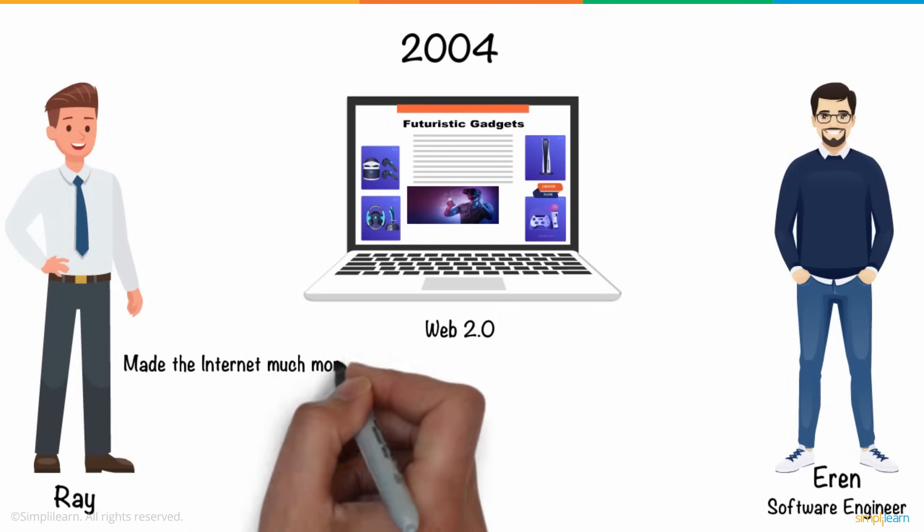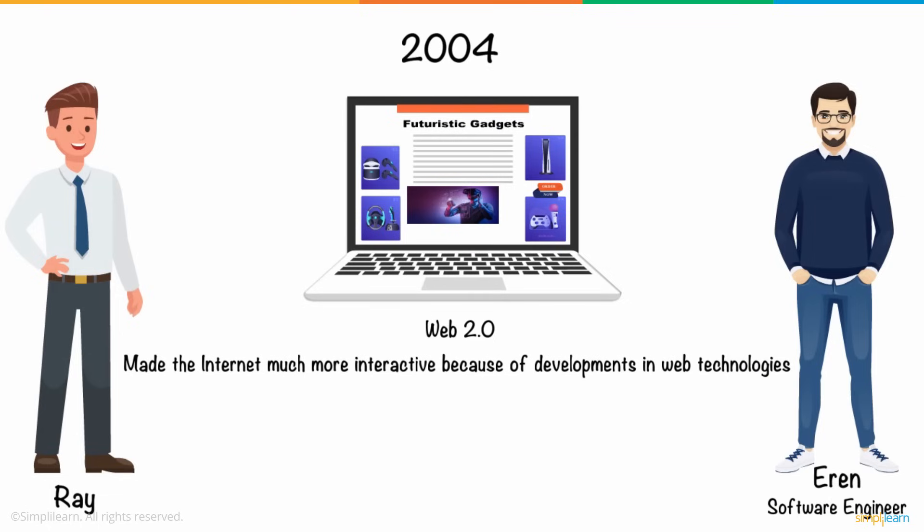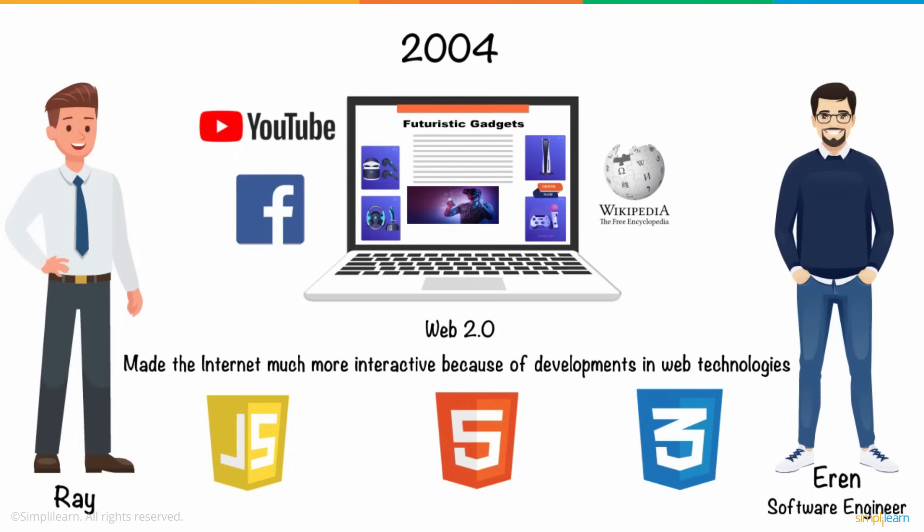Web 2.0 made the internet much more interactive because of developments in web technologies such as JavaScript, HTML5, CSS3, and others, which allowed companies to create interactive web platforms like YouTube, Facebook, Wikipedia, and many more.